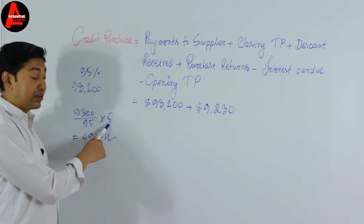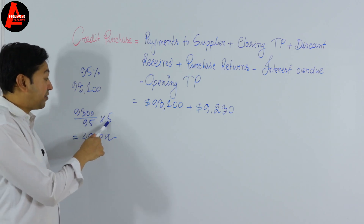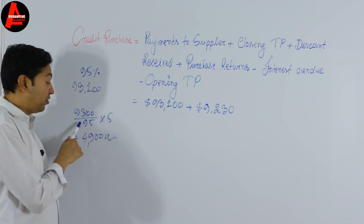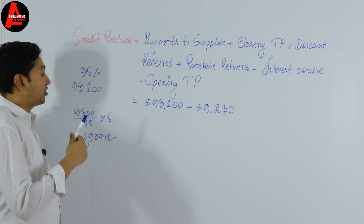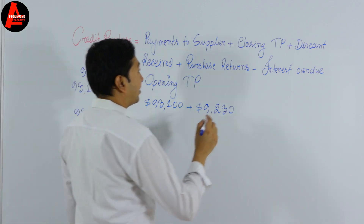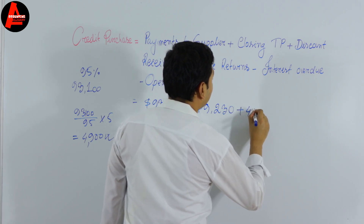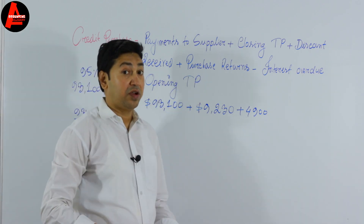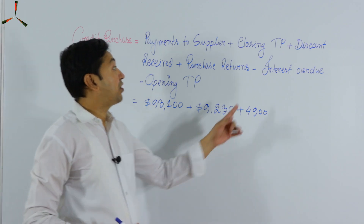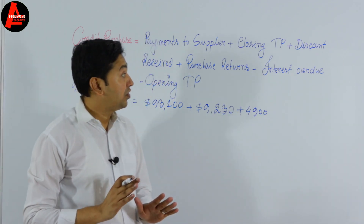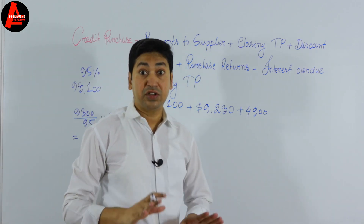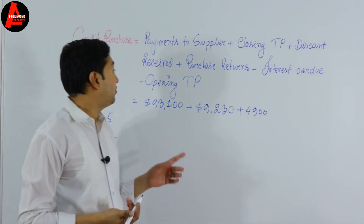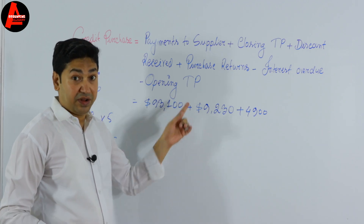So: 100% minus 5% equals 95%, meaning $93,100 is the 95% amount. Calculating five percent of the original gives us $4,900 discount received. We add $4,900. For purchase returns — there are none in this question, so we don't write anything. There is also no interest overdue, so we skip that too. However, if your question includes these items, you must include them or your answer will be incorrect.